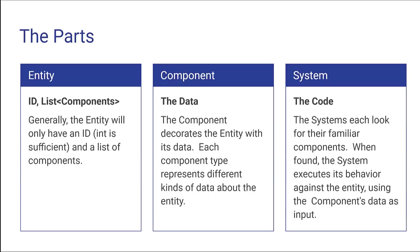Let's talk about the three parts. An entity really isn't anything by itself except a collection of components — I've put ID plus list of components, but you probably only need one or the other, because all you're really trying to do is tie a collection of components to an entity. Either your components could have an entity ID property pointing to the entity, or they could be added to the entity's list of components. The entity doesn't have any behaviors and doesn't have a lot of data — the data is in the components.